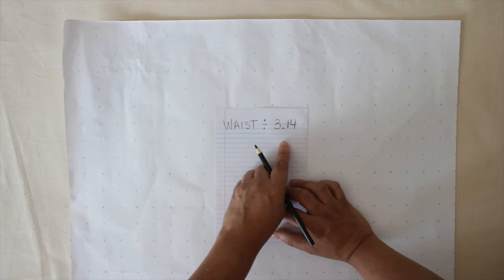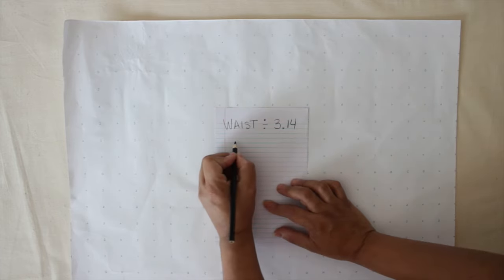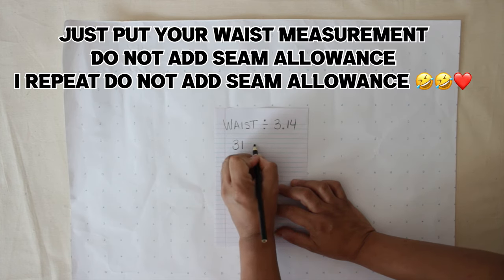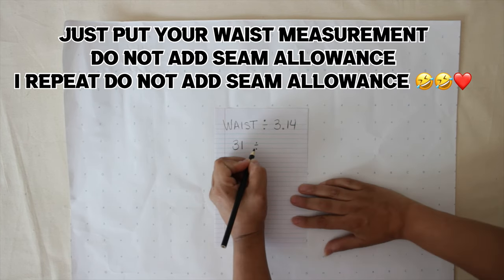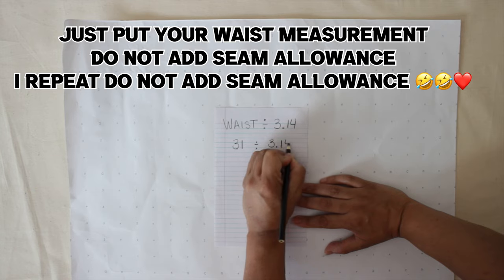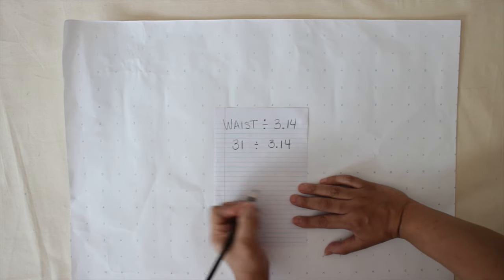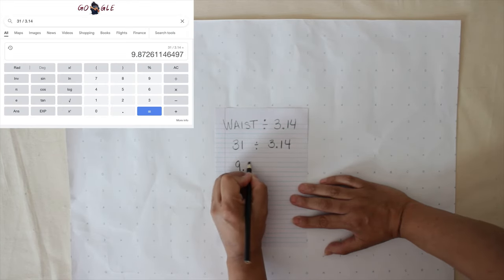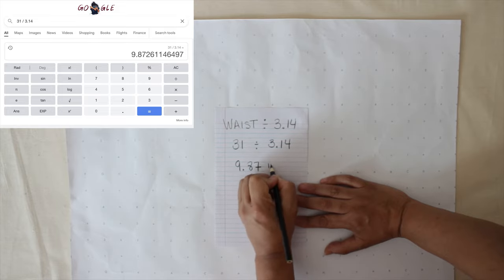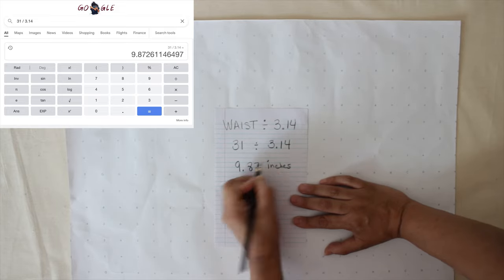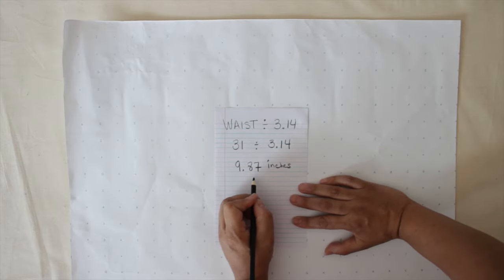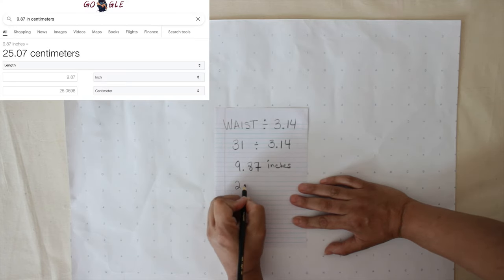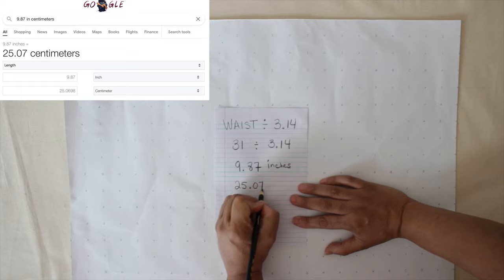Alright, let's get started. The first thing we're going to do is get our waist measurement. My dress form waist measurement is 31. So we're going to divide that by 3.14, and that's going to come out to 9.87 inches. So we're going to turn that into centimeters. That's 25.07 centimeters.